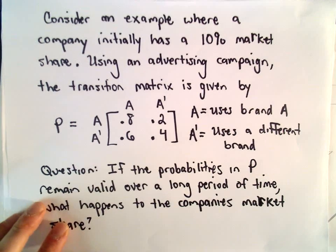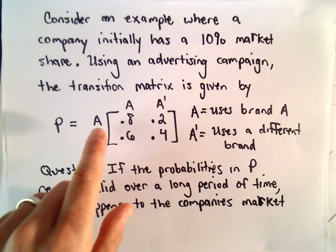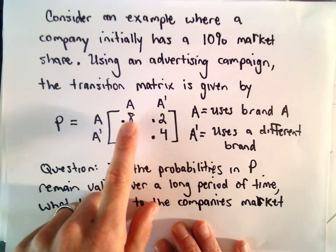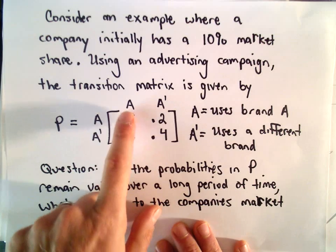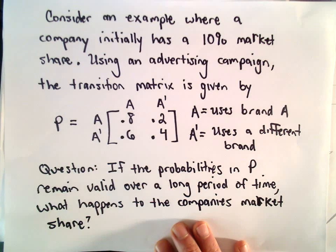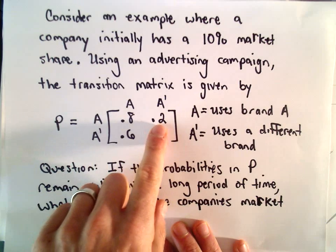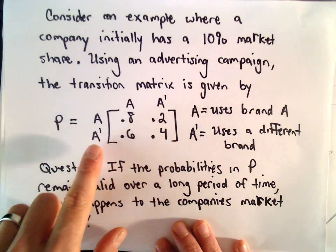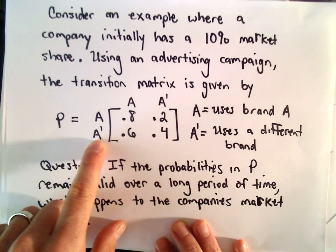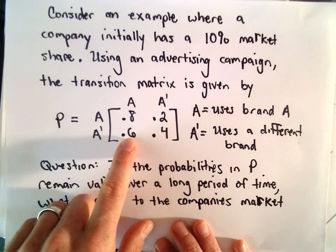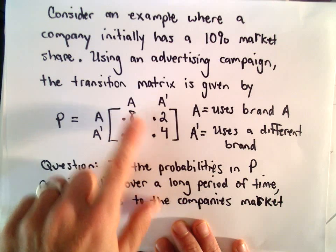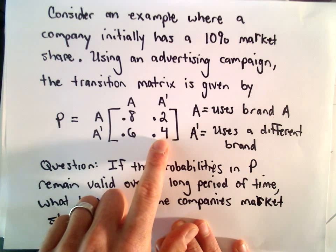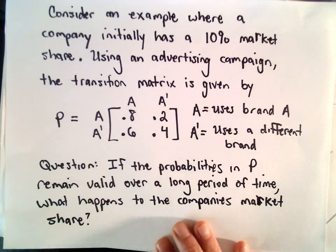From our transition matrix, if somebody already uses brand A, under this advertising campaign there'll be an 80% probability that they'll keep using brand A. If they use brand A initially, there's a 20% probability that they'll switch to some other brand. If somebody initially doesn't use brand A, there's a 60% probability that they'll start using that brand. And if they don't use it originally, there's a 40% probability that they'll keep using something different.